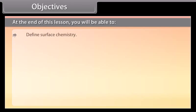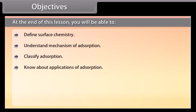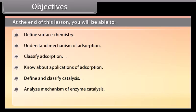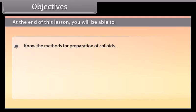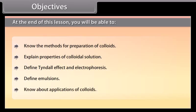Objectives: At the end of this lesson, you will be able to define surface chemistry, understand the mechanism of adsorption, classify adsorption, know about applications of adsorption, define and classify catalysis, analyze the mechanism of enzyme catalysis, define and classify colloids, know the methods for preparation of colloids, explain properties of colloidal solution, define Tyndall effect and electrophoresis, and define emulsions and know about applications of colloids.